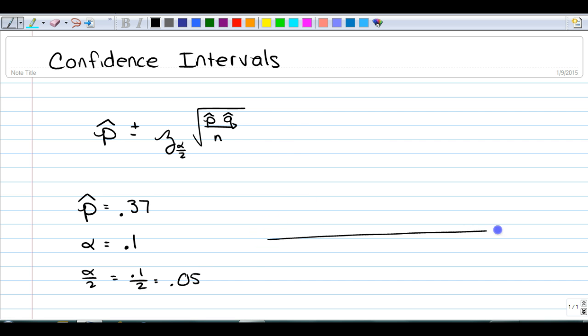What this means is if our sample proportion is 0.37, we want to find the two points on the horizontal axis that leave half of alpha in each tail. That would be a 90% confidence interval.